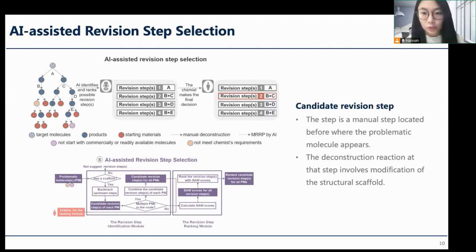Upon the completion of the initial retrosynthetic route, chemists may find that the output path has problems, such as the route may not start with readily available molecules, or chemists may think that some molecules are too expensive. Then AI plays an assistive role to chemists by suggesting candidate steps to fix. We developed a pipeline for AI. First, AI would backtrack the retrosynthetic route from a failure position to locate the possible upstream steps that lead to it. Based on the expert's feedback, we achieved this by extracting the scaffolds of the molecules at each step and identifying the deconstructions that involve scaffold modification.